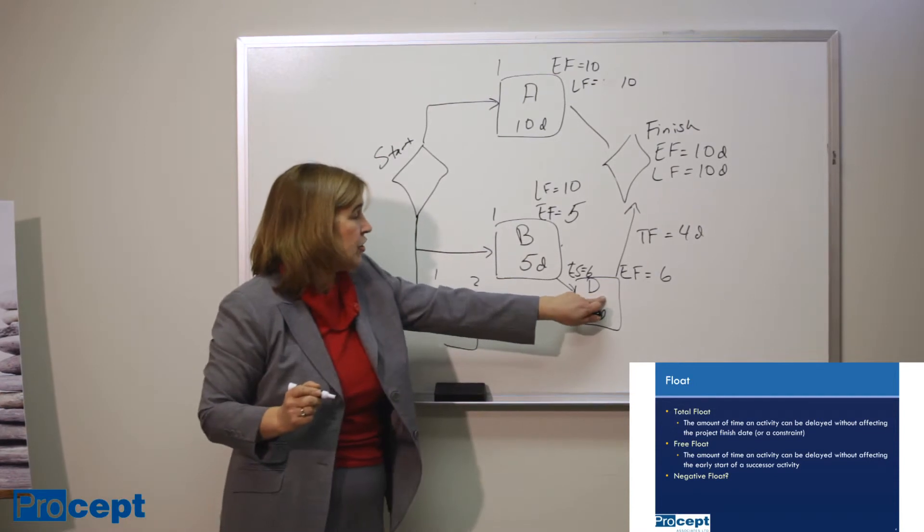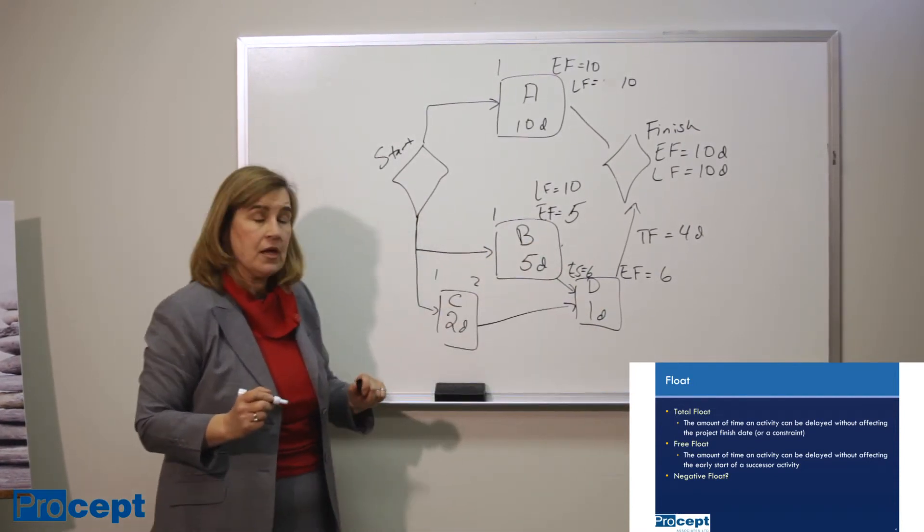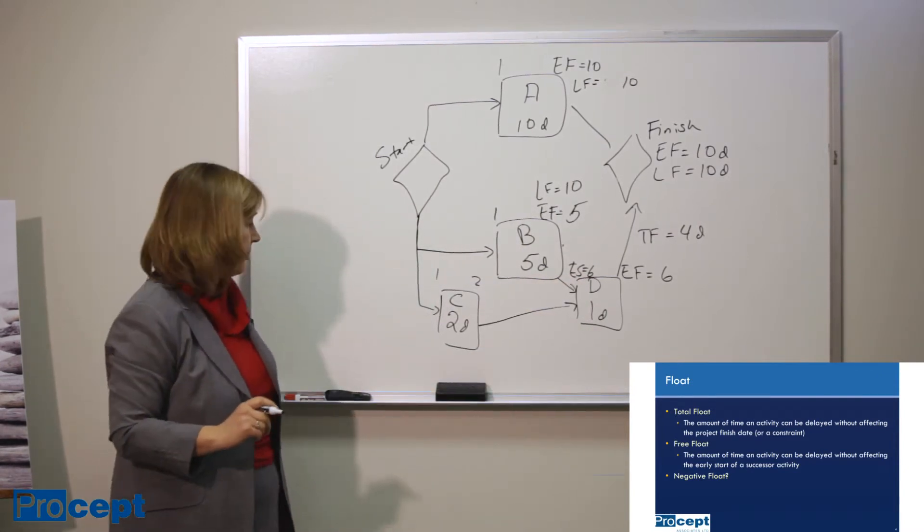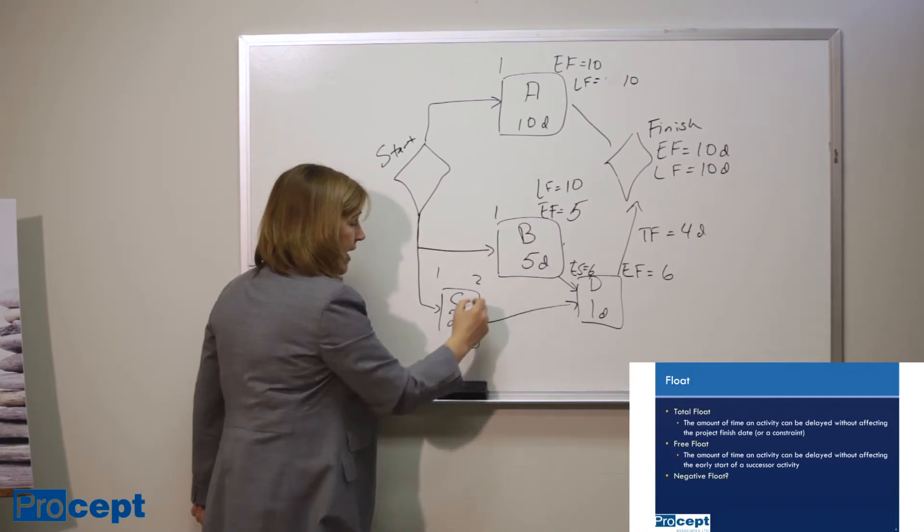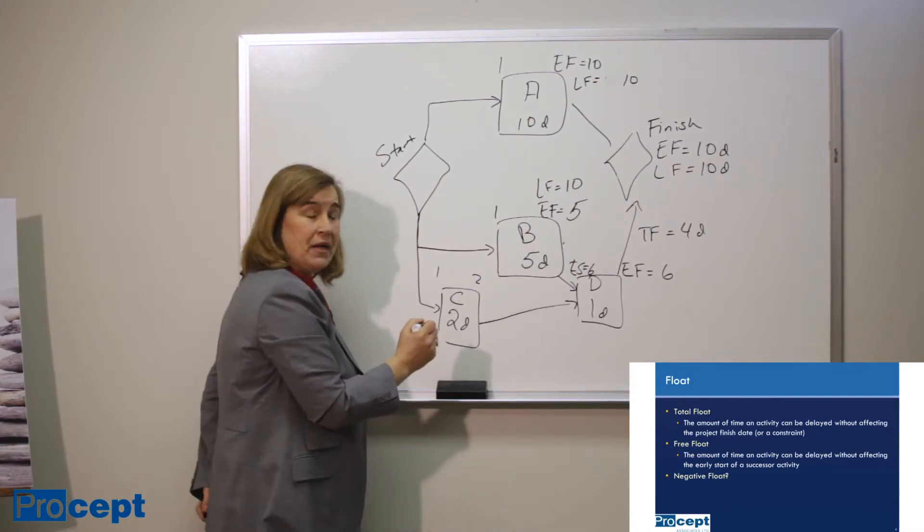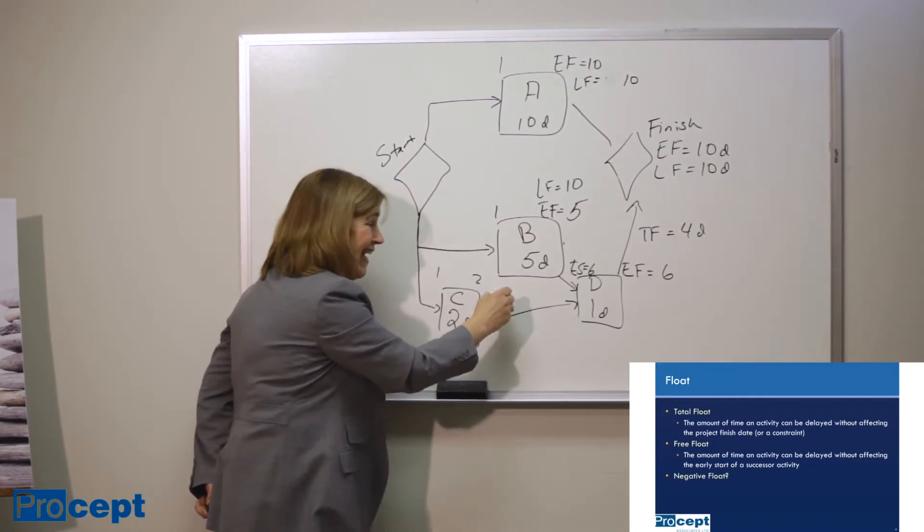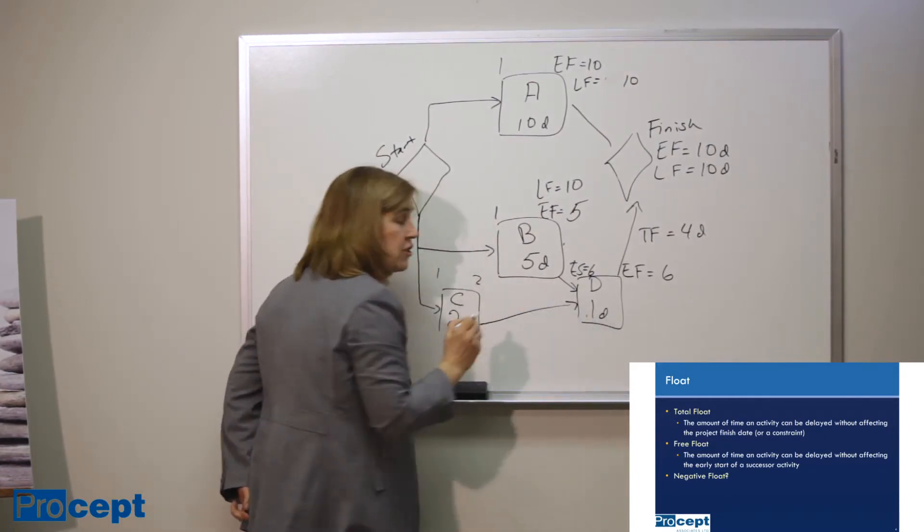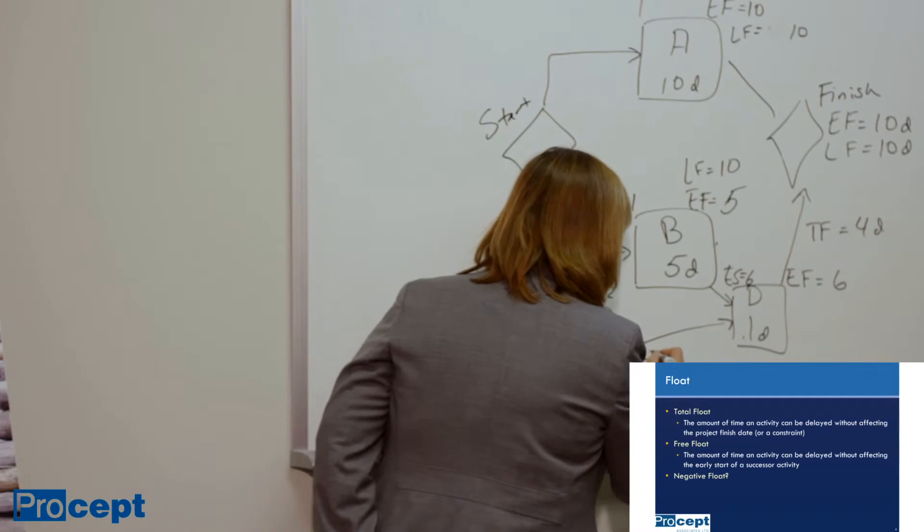Now, D cannot start until both B and C are finished. So the earliest start time for D doesn't change. But you can see that there is a 3 day gap between C and B. In other words, we can delay C up to 3 days without affecting the start time of D. Hence, the definition of free float. The amount of time we can delay an activity before it affects any other activity. That's called free float.